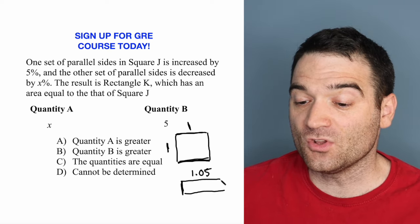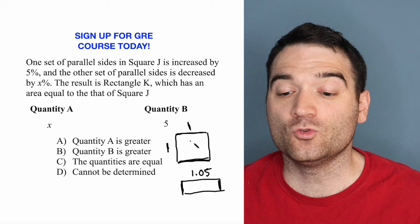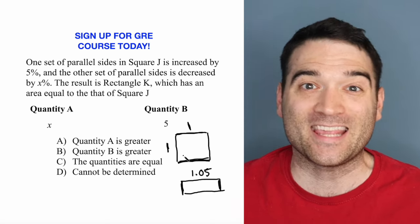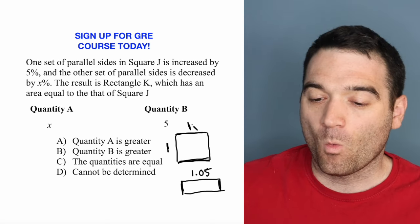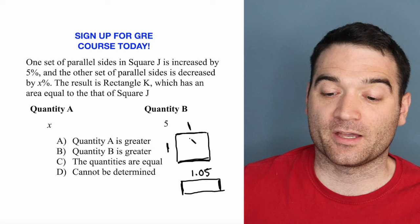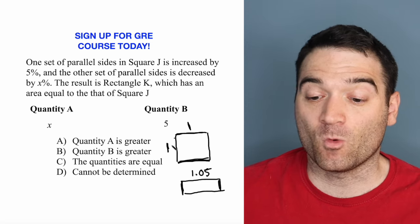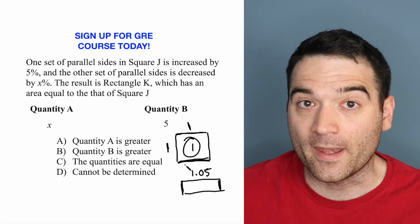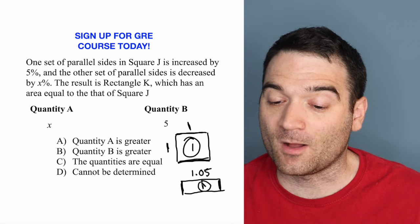But the result is that these two quadrilaterals are going to have equal areas. What's the area of the first square, square J? Well, it's going to be 1 times 1, or 1. And that means the area of this one is going to be 1 as well.